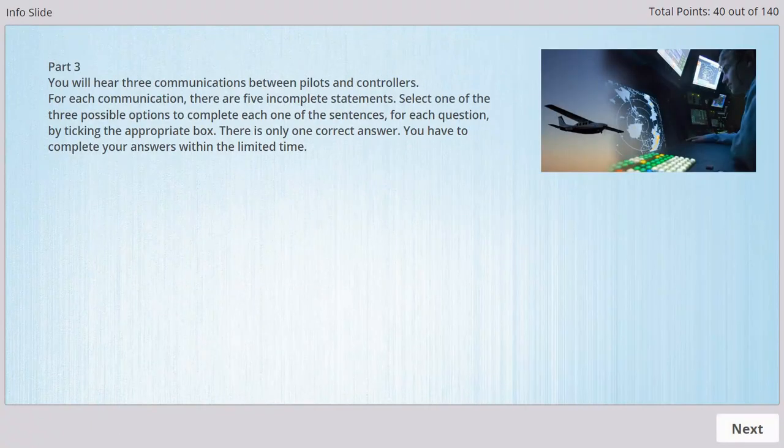Part 3. You will hear three communications between pilots and controllers. For each communication, there are five incomplete statements. Select one of the three possible options to complete each one of the sentences, for each question, by ticking the appropriate box. There is only one correct answer. You have to complete your answers within the limited time.